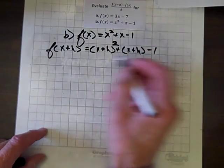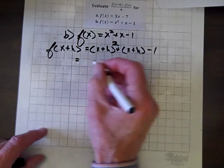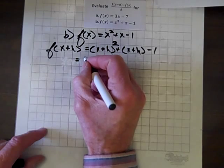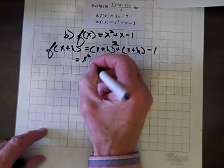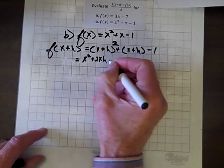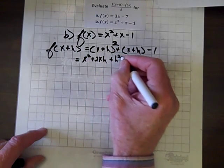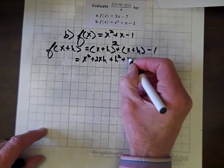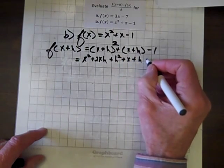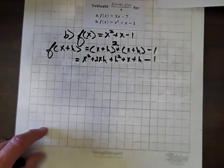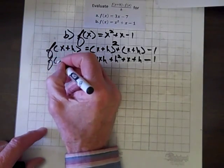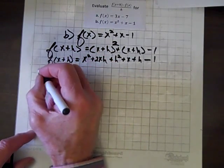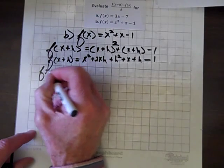Now let's expand. By the FOIL method, squaring (x+h) gives x squared plus 2xh plus h squared. Multiplying through by positive 1 gives us plus x plus h, and here's our minus 1. That is f(x+h).